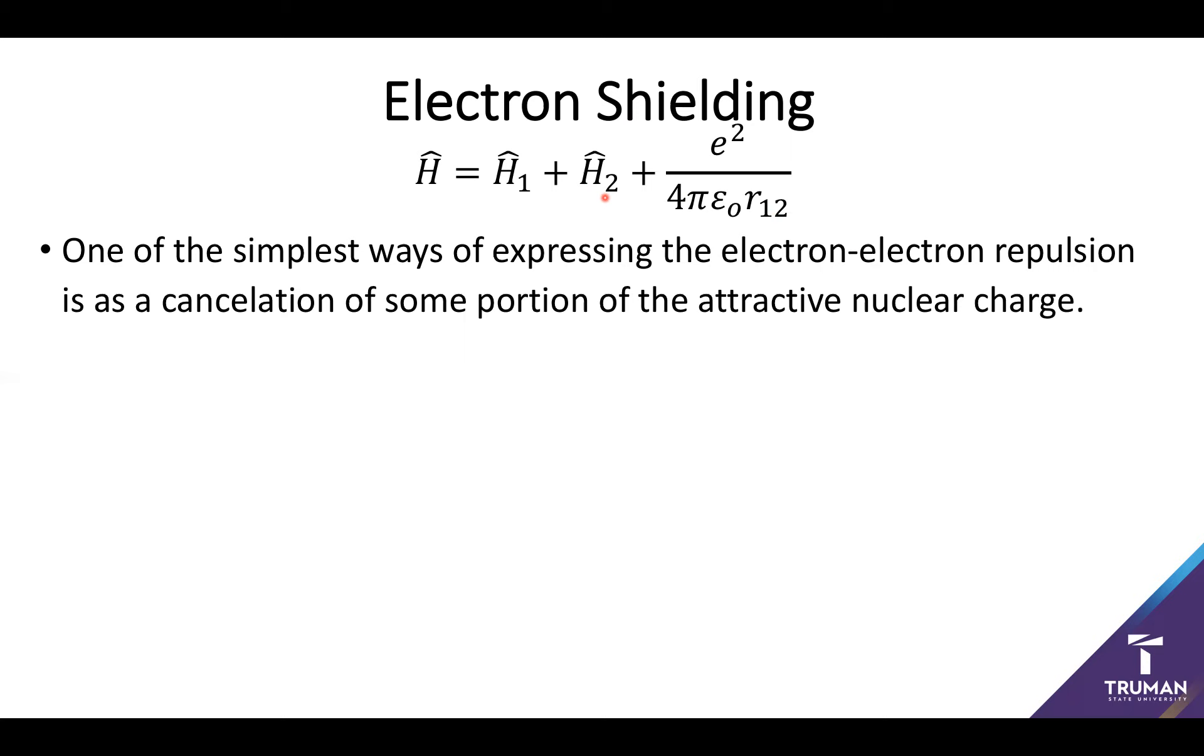However, there is a classic cheat method of trying to wiggle around having to deal with the full electron-electron repulsion. And that's by trying to bring this term into a modified form of our hydrogenic orbitals. This is typically done by realizing that this positive repulsive electron-electron potential can be treated as more or less canceling out some of the attraction of an electron to the nucleus. You can think about the electron wants to go near the nucleus, but there may be another electron in the way which reduces how much it's attracted in.